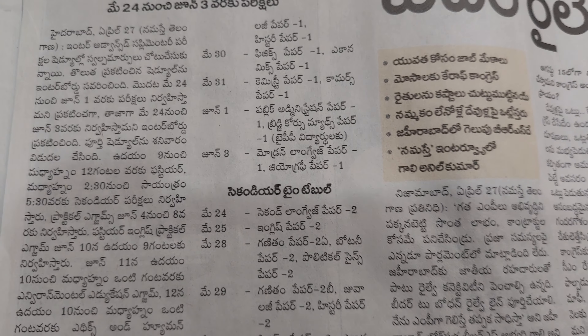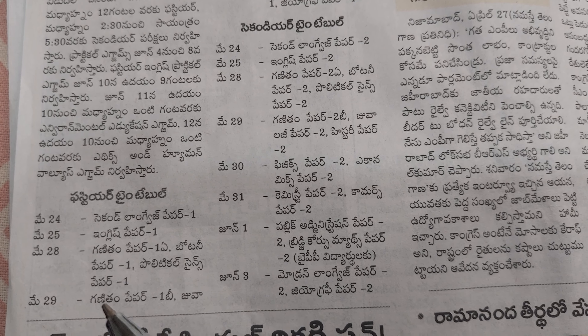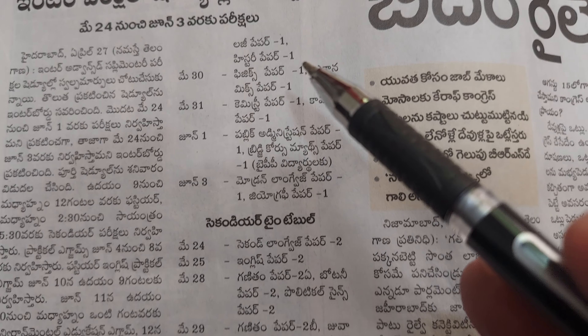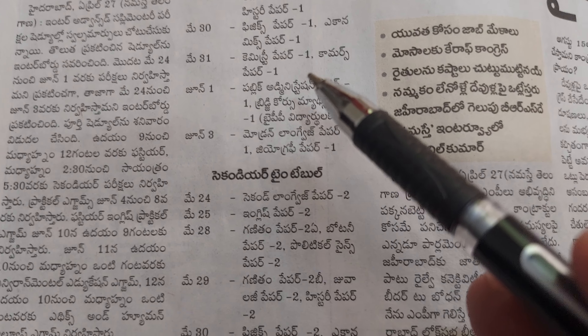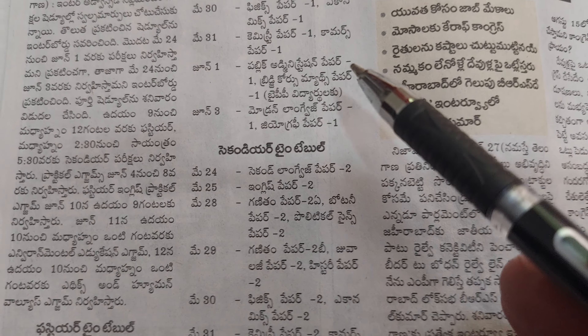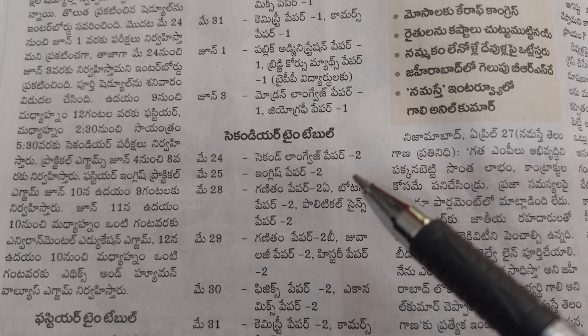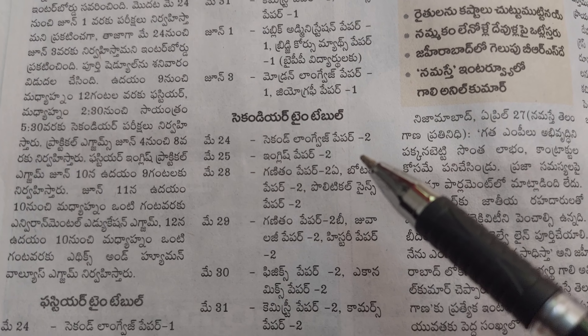So this is the fresh, updated timetable. First year: May 24 — second language; May 25 — English; 26 and 27 — holidays; May 28 — Mass A (Botany, Political Science); May 29 — Mass B; May 30 — Physics, Economics; May 31 — Chemistry, Commerce. These are the major subjects.